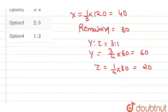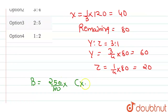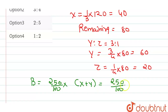Now, अब हम consider करते हैं for B। तो B हमारा 250% है X plus Y का। तो X plus Y में total कितने हैं? 40। तो यह value हो जाएगी 250 divided by 100 into 40, तो यह value आएगी 100 के equal।